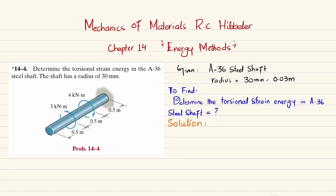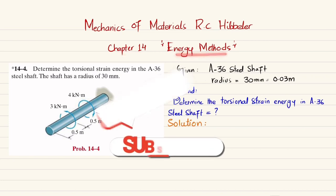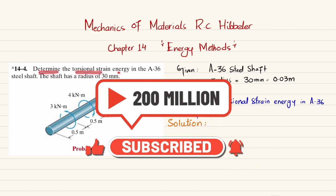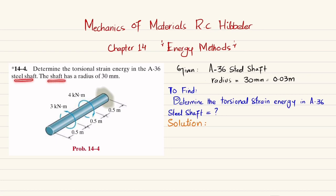Welcome back. Problem 14-4 is taken from Chapter 14 'Energy Methods' in the book 'Mechanics of Materials' by R.C. Hibbeler. The problem statement: determine the torsional strain energy in an A36 steel shaft. The shaft has a radius of 30 millimeters and is acted upon by torques of 3 kilonewton·meter and 4 kilonewton·meter at various locations, with 0.5 meter segments. One end is fixed.